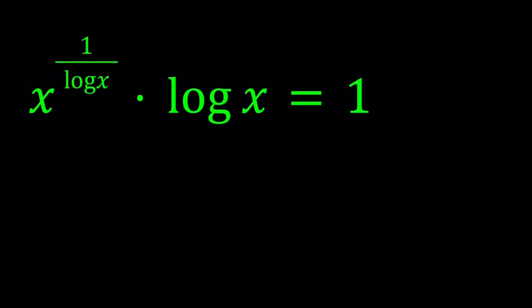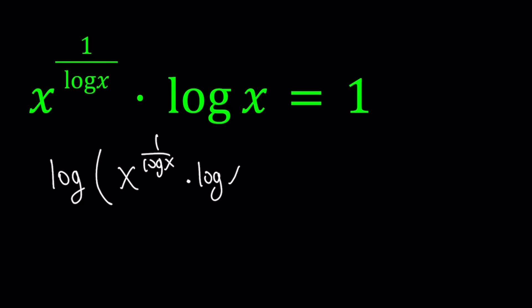Let's go ahead and log both sides. So I'm going to log the product here — x to the power 1 over log x multiplied by log x. And on the right hand side, log 1 is going to be 0.